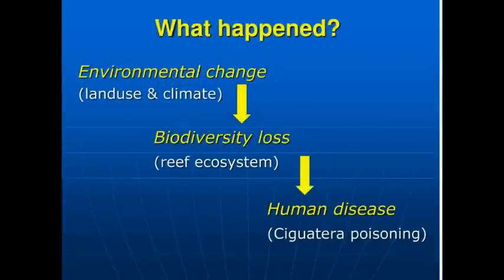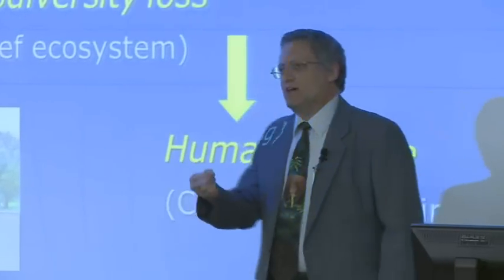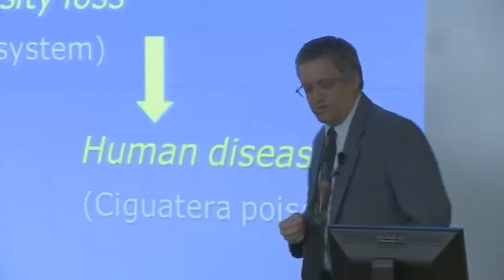What went wrong? There was a change in the environment which caused the reef ecosystem that supported the coral trout as healthy fish to be disrupted. The fish became unhealthy and toxic and they poisoned the people, who ended up in Gove Hospital. I'll come back to that and explain exactly what happened.